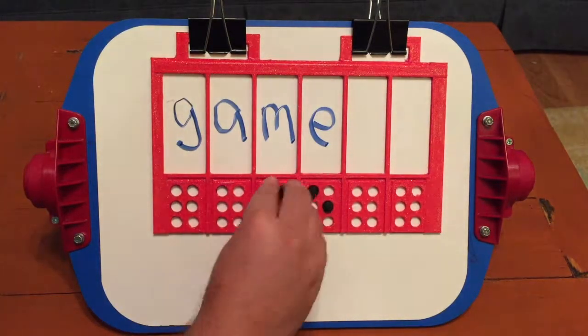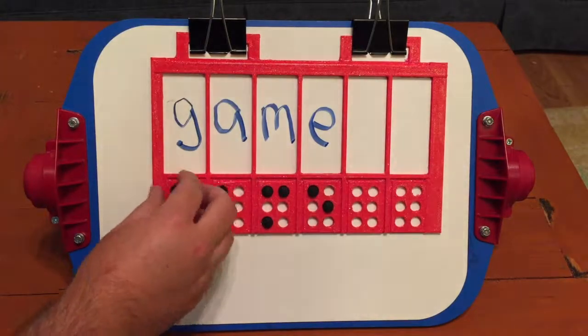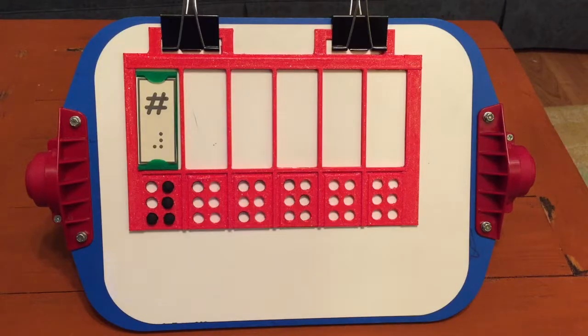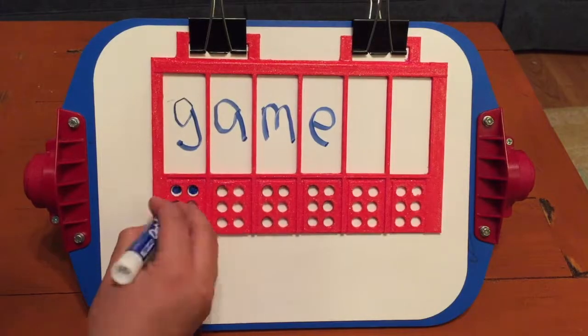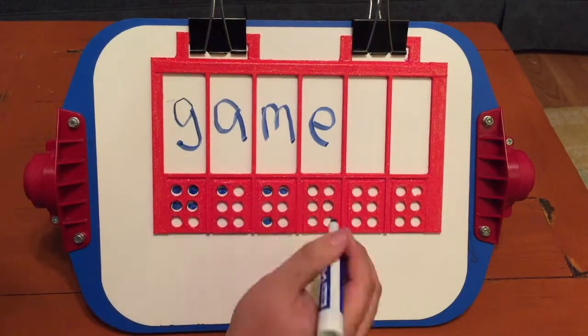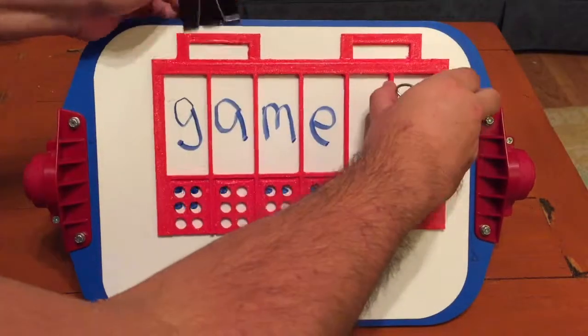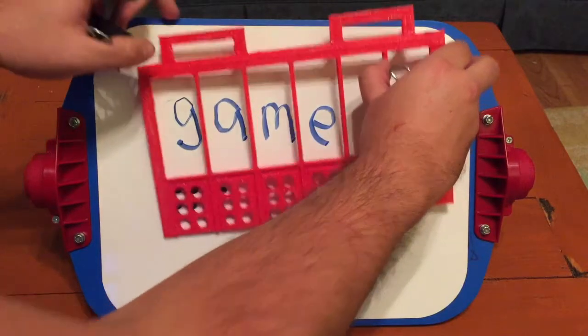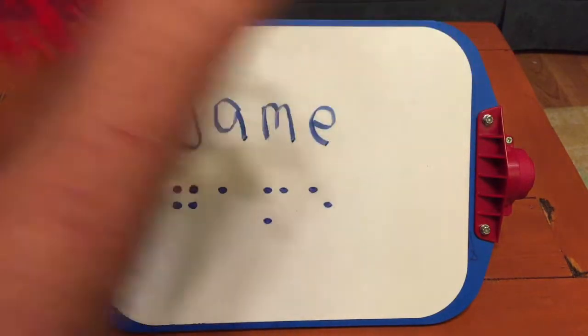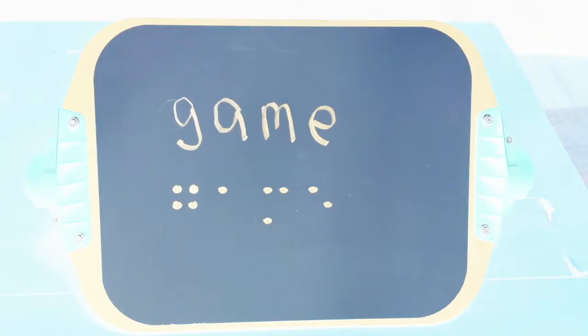Three: Have the student use the empty Braille cells as a guide to fill in the appropriate dots to whatever word is in the boxes. And voila, they have created and learned Braille in a new, exciting, and fun way.